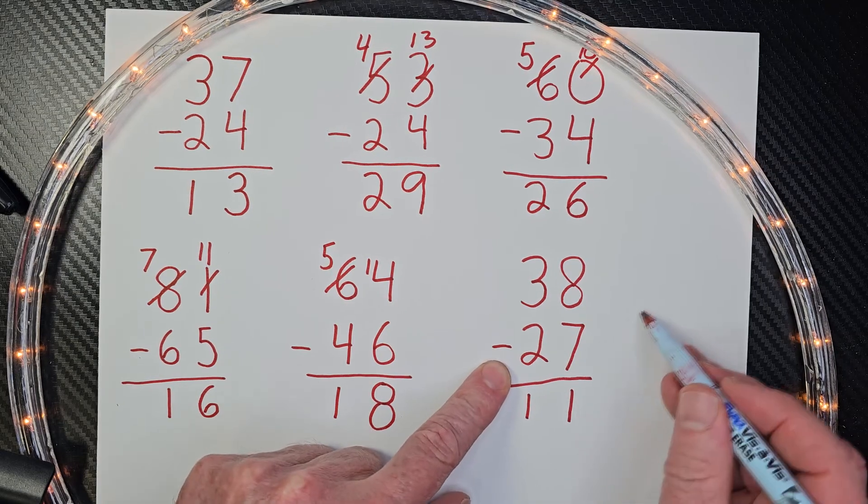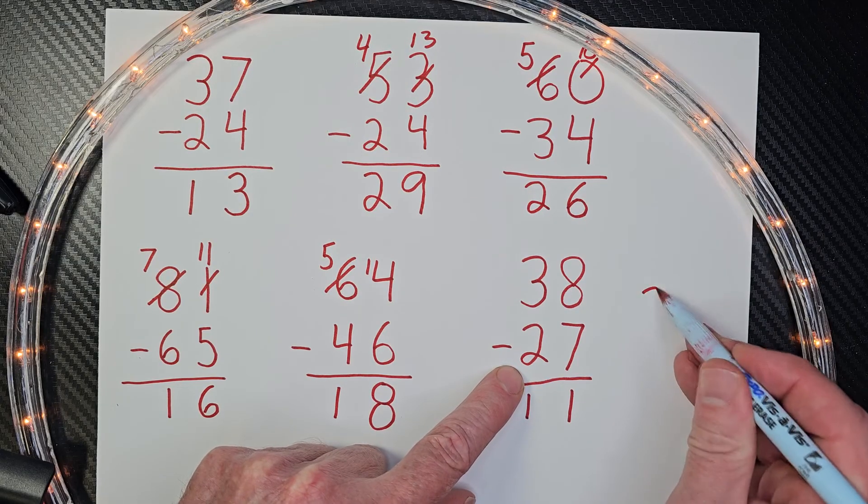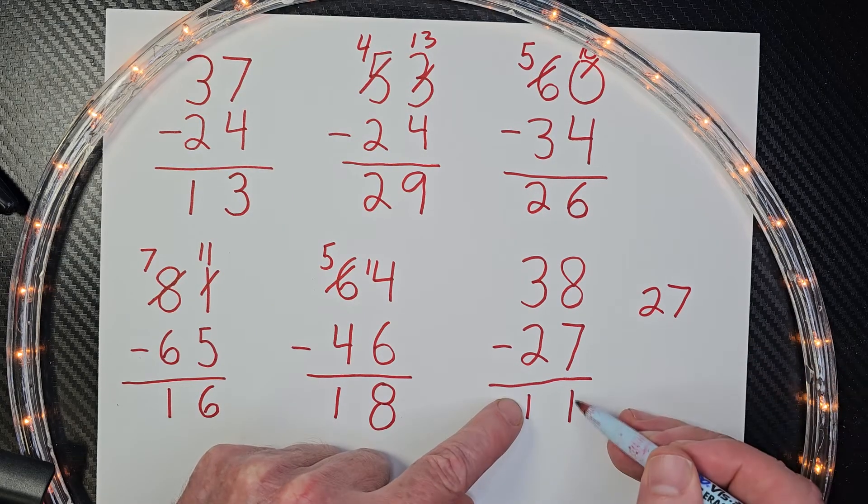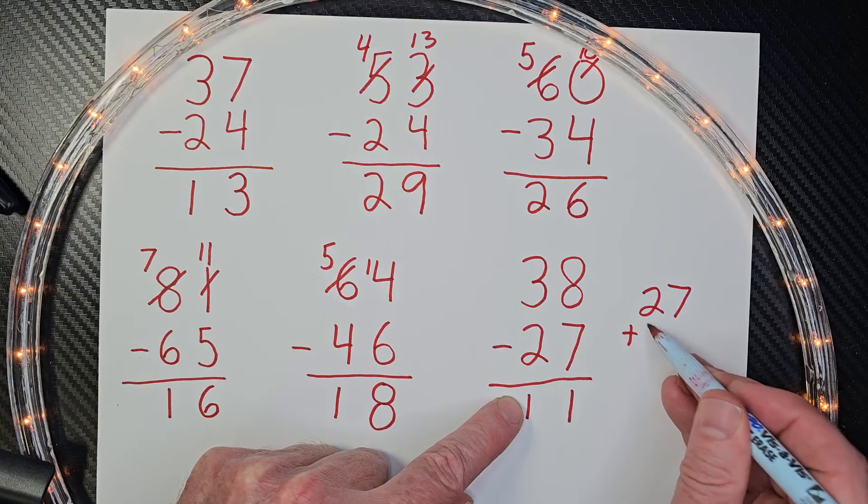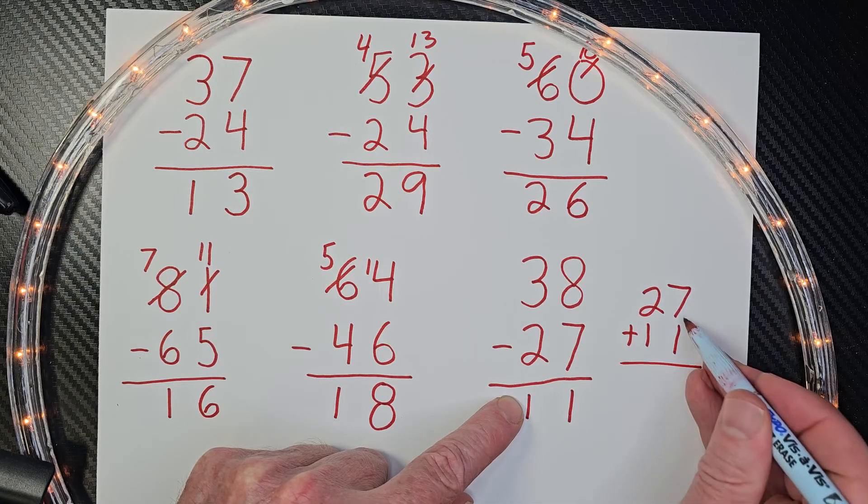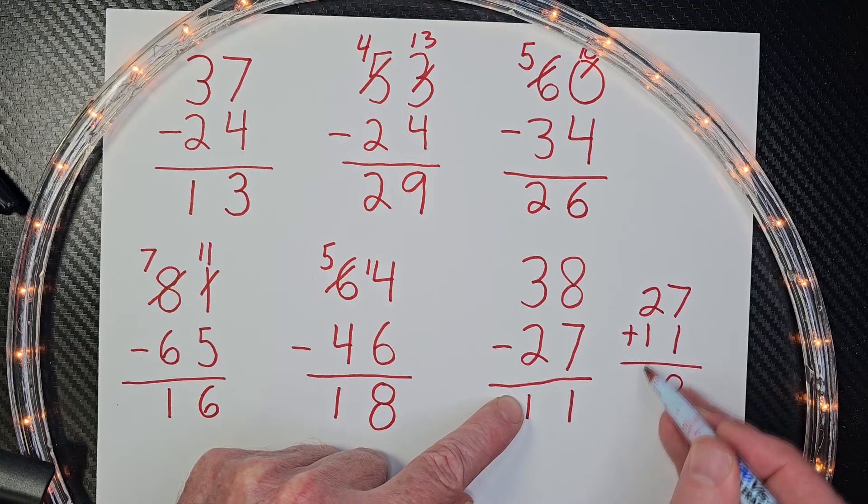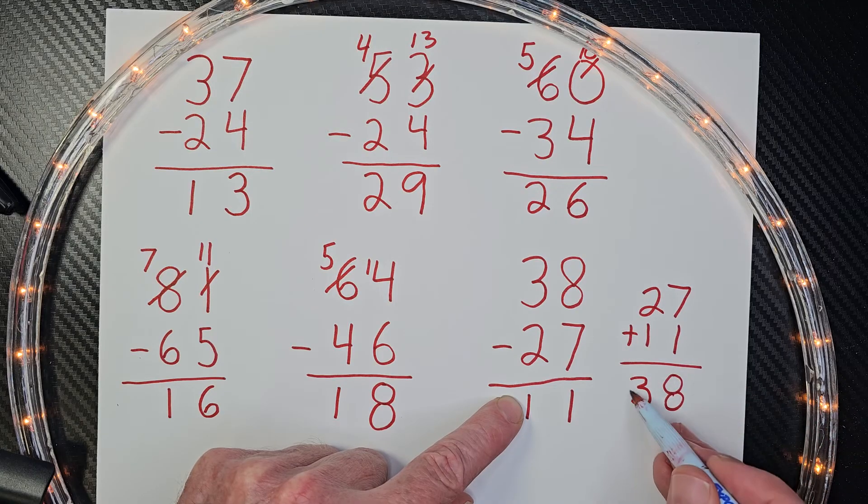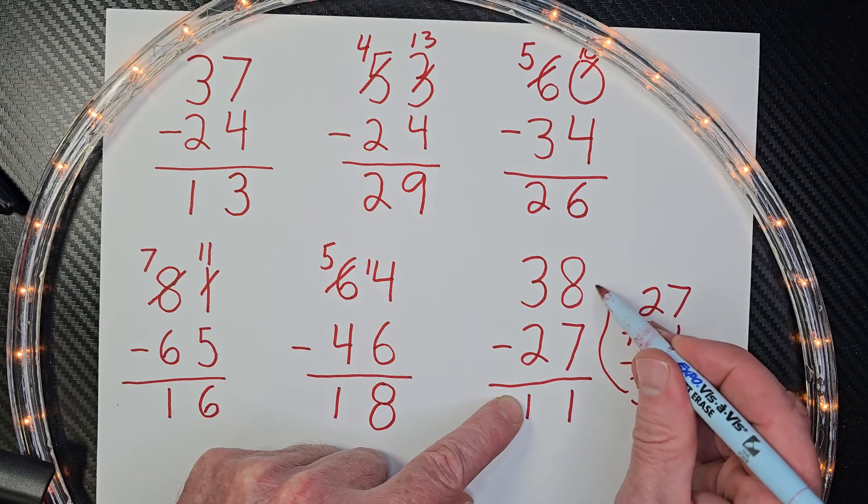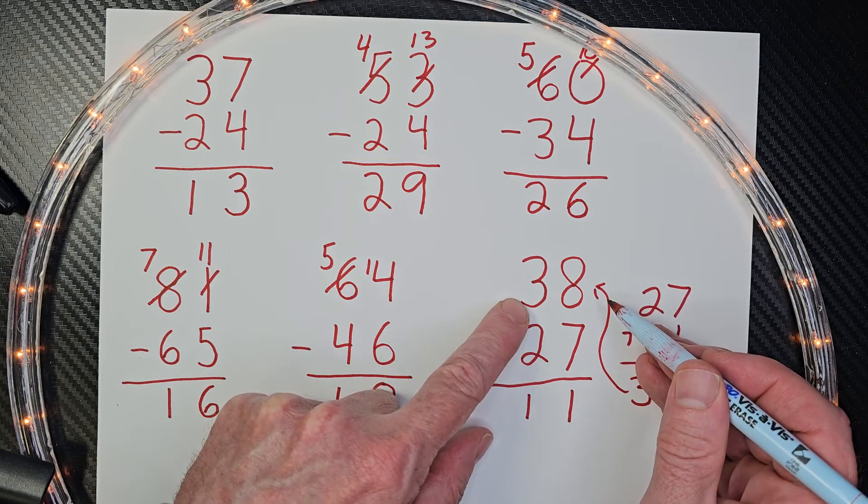And if you ever want to check this, all you have to do is take this bottom number right here, 27 plus 11. And then seven plus one equals eight. And two plus one equals three. And this number should match the top two digits right there.